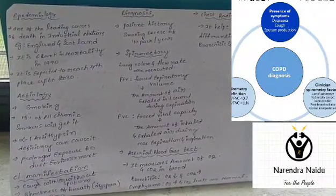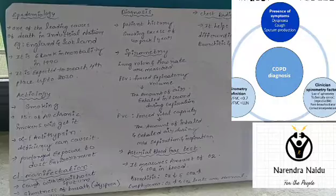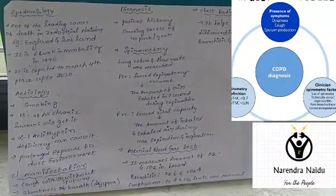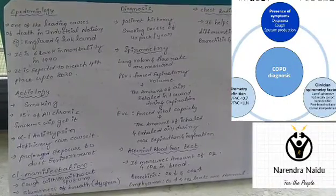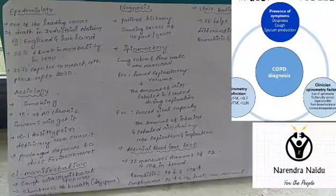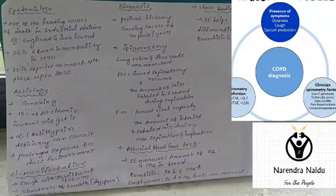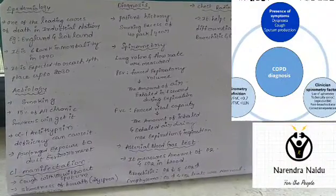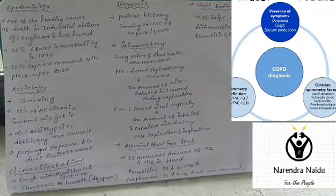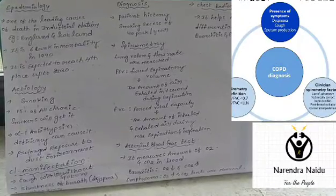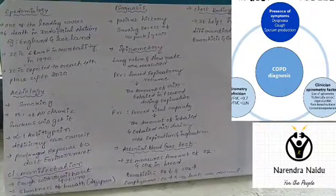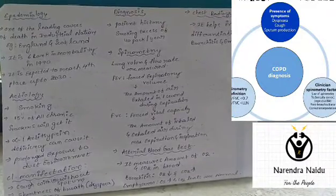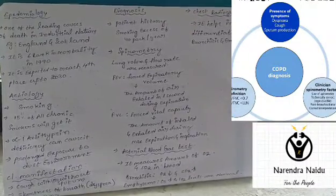The arterial blood gas test measures the amount of oxygen and carbon dioxide in the blood. In chronic bronchitis, oxygen levels are low and carbon dioxide levels are high. In emphysema, oxygen levels are high and carbon dioxide levels are normal.